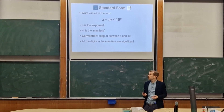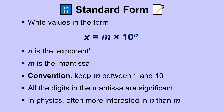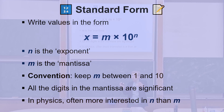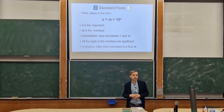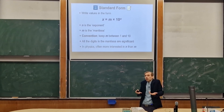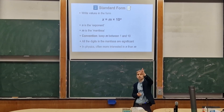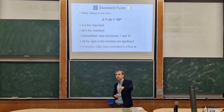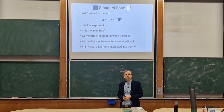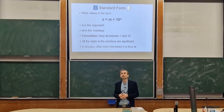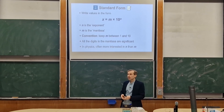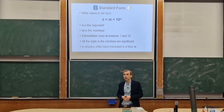In a lot of fields in physics, we're actually more interested in n, the exponent, than whatever the mantissa is. Especially when doing quick calculations, we're often interested in the order of magnitude of a number — is it huge or tiny? Whether the mantissa is 2.3 or 4.8 matters less for a quick calculation. If the mantissa equals exactly 10, strictly you might want to write it as 1 times 10 to the next power, but in general we want to keep the mantissa in that form.